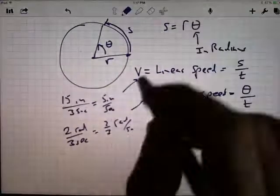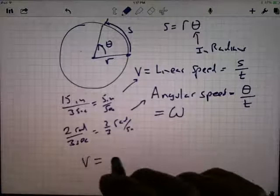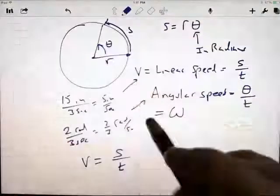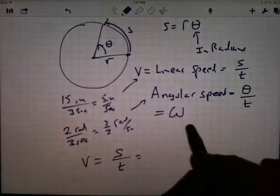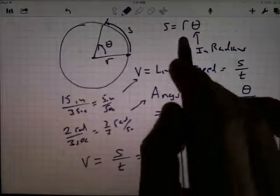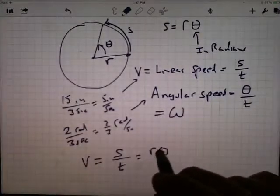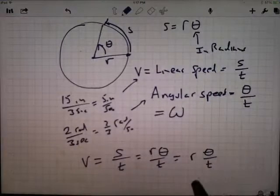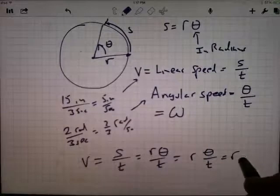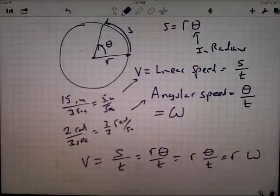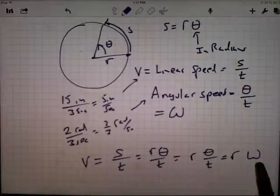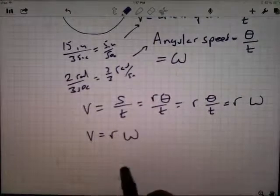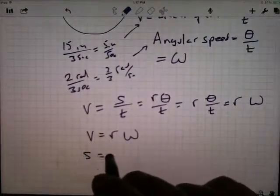Let's go right up here and say that the linear speed is the arc length divided by the time. But the arc length is the radius times the angle divided by the time. If I rewrite this as the radius times the angle divided by time, that's equal to the radius times omega. The linear speed is the radius times the angular speed.